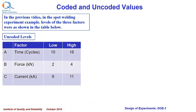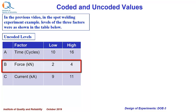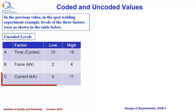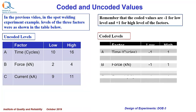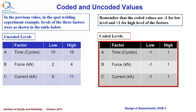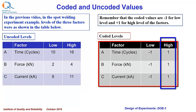In the previous video, in the spot welding experiment example, levels of the three factors were as shown in the table. These are uncoded levels. Coded values are minus 1 for low level and plus 1 for high level of the factors, and therefore the table of coded values for this experiment can be seen in black color.